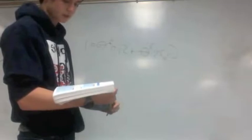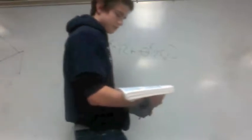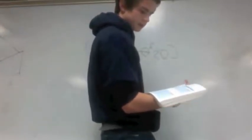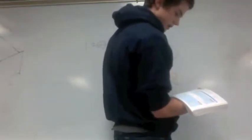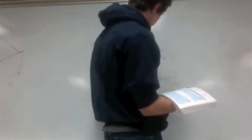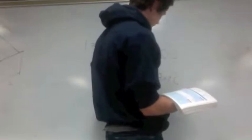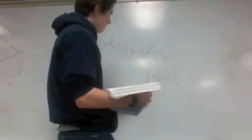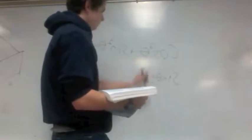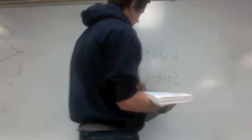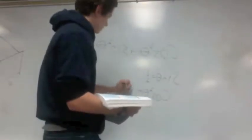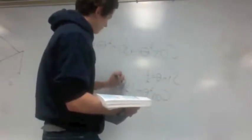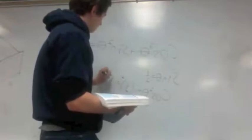We'll just go through a problem here. Find the possible exact values of cosine theta for sine theta equal to 1/2. What we're going to do is take the 1/2 and plug it into our formula, so we end up with cosine squared theta plus (1/2) squared is equal to 1.